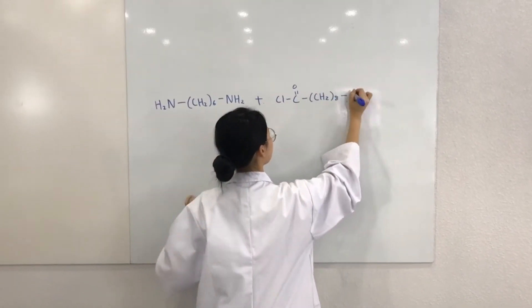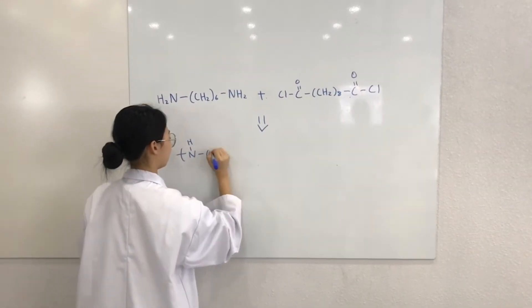So, how does this work? This is a condensation polymerization. Polymers are giant molecules that are composed of many smaller repeating subunits called monomers.